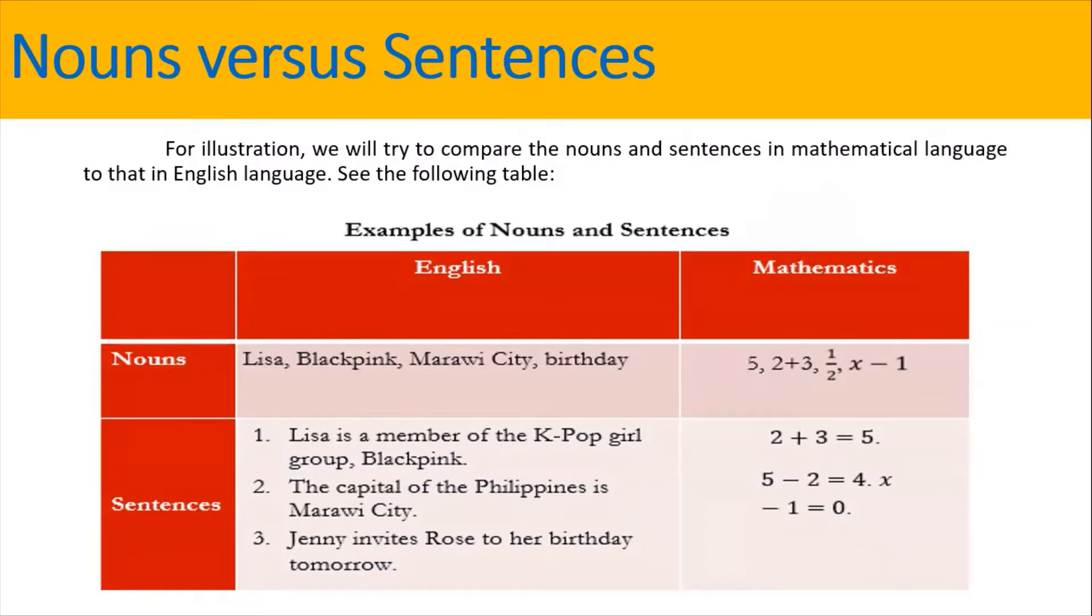And then we also have nouns for mathematics, which are the following. We have 5, 3, 1 half, x minus 1.